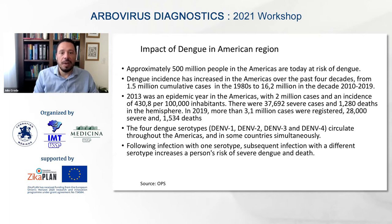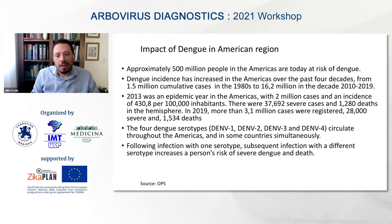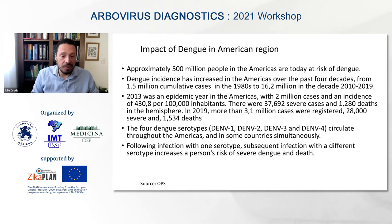Dengue is the major arbovirosis in the region, with huge impact and many deaths per year. Nowadays, all four dengue serotypes — dengue 1, 2, 3, and 4 — circulate throughout the Americas and Latin America. In some countries, such as Brazil, all four serotypes circulate simultaneously in the same year.